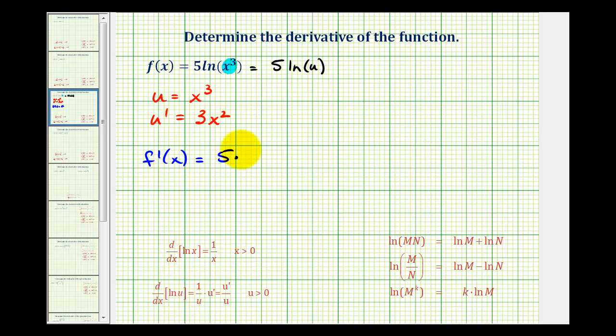which is given here below with the chain rule. We'll have 1/u times u', so we'll have 1/x³ times u', which is 3x².